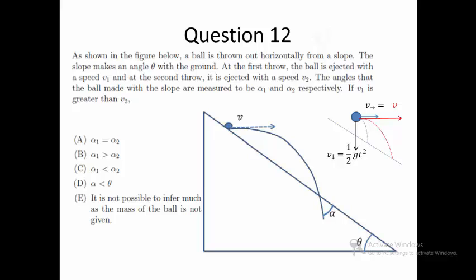That means if the second throw uses a slower velocity, the angle that the ball makes with the slope will become larger. Thus the answer is C.